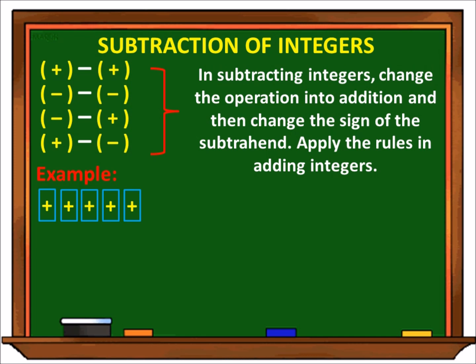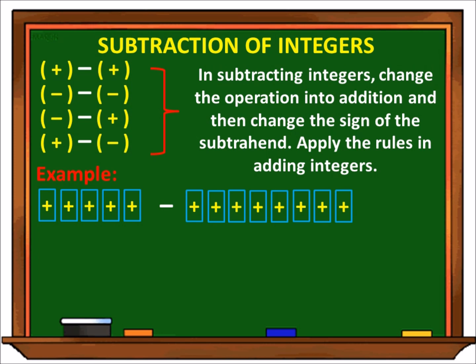Example: we have 5 positive na tiles minus 8 positive na tiles. Ang given natin ngayon ay positive 5 minus positive 8. Ang gagawin natin ay copyin lang natin yung positive 5, then from minus gagawin natin siyang plus, and from positive 8 gagawin natin siyang negative 8. Then apply lang natin yung rule sa pag-add ng integers. Since mas malaki ang 8, kaya ang gagamitin na sign ay negative. Kaya ang answer natin ay negative 3.